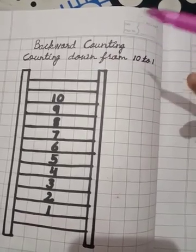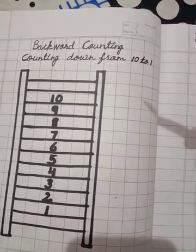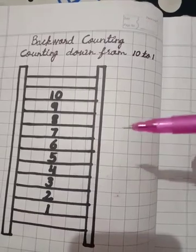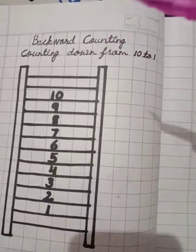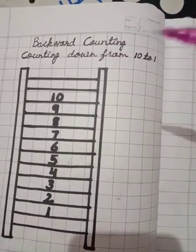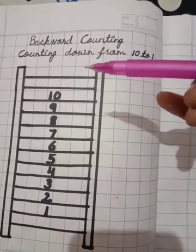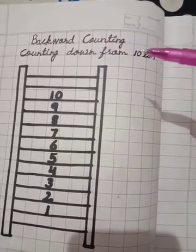Forward me hum log seedha ginti padhe the, 1 to 10. Par, abhi hum log backward counting padh rahe hai. Ulta-ginti. Counting down from 10 to 1.